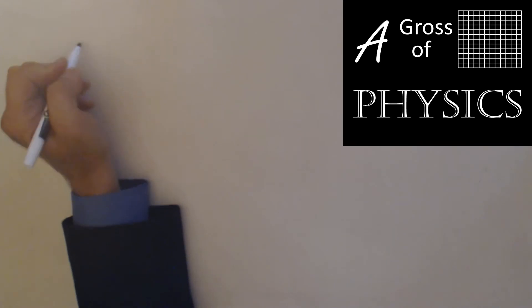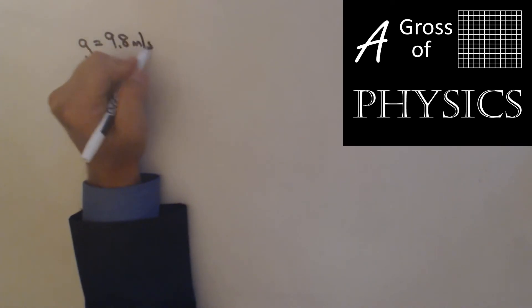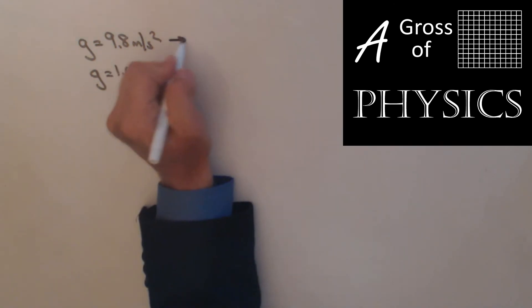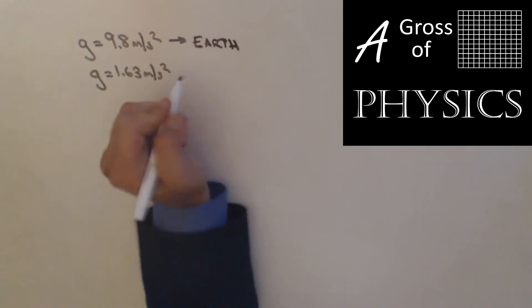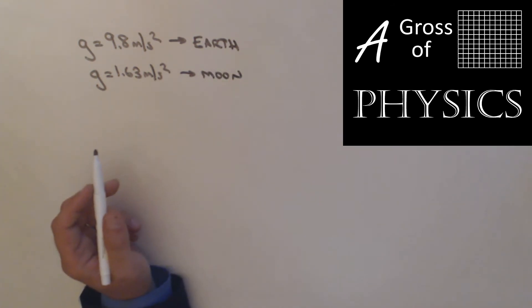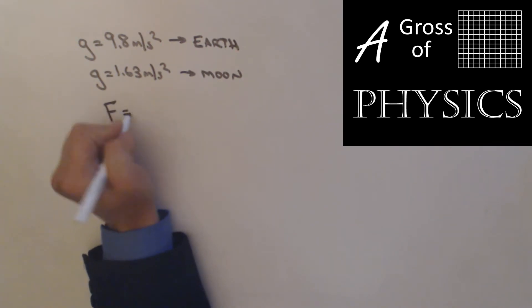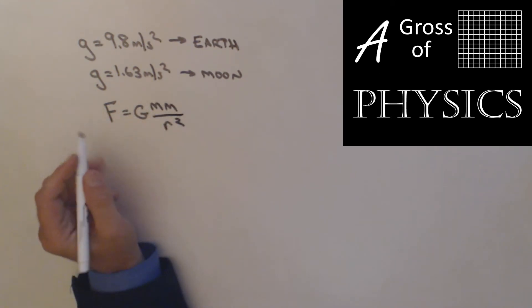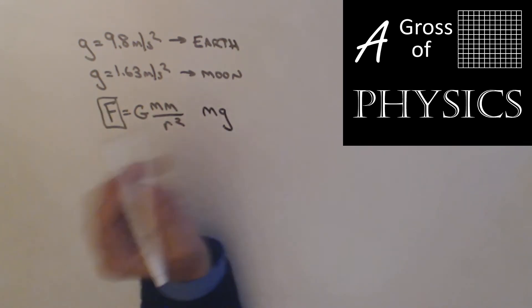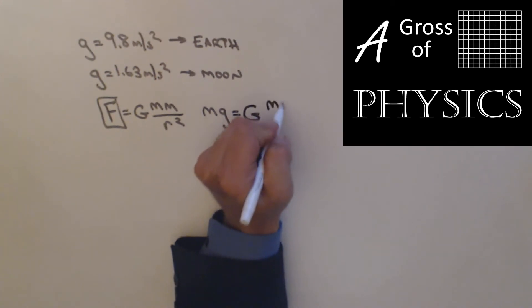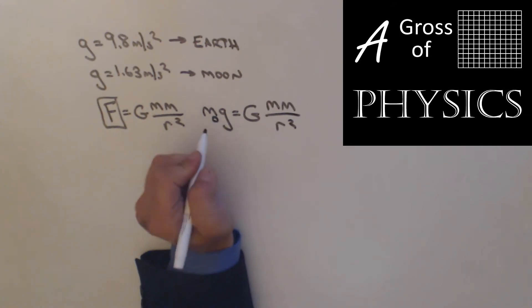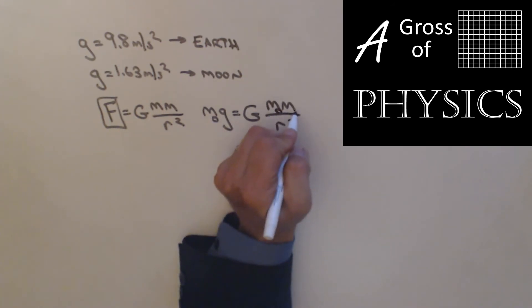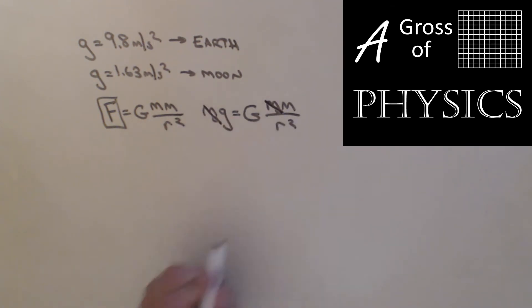Throughout the course we've been using 9.8 for the acceleration of gravity on the earth, and we've said that g is 1.63 on the moon. These numbers stem from Newton's law of universal gravitation. Because the equation is big G m m over r squared, any object that we have a force of gravity for, which is mg, that would equal G m m over r squared. If this was the mass of the object and this is the mass of the earth or the moon, the object mass term would disappear.